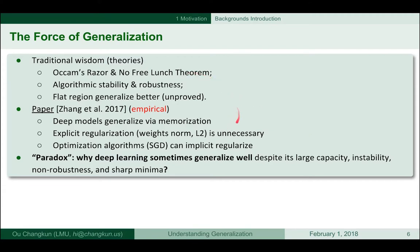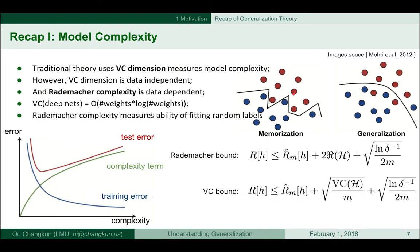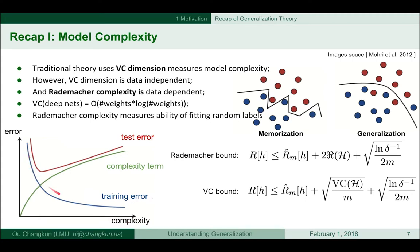The paper and the traditional theories are standing on opposite sides. What this paper is going to explain is a decomposition of generalization theory to understand when generalization fails. Before diving into the paper, let's review the traditional theory — for example, model complexity. The traditional theory uses VC dimensions to measure how complex a model is.